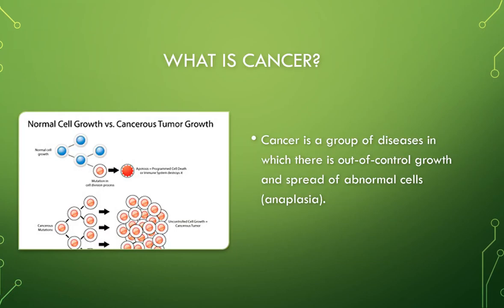I'm going to give a very brief overview — the textbook gives a much more thorough, in-depth discussion. Basically, cancer is an out-of-control growth of abnormal cells. They no longer have the growth inhibitor; they don't listen to those signals anymore. The technical term for that is anaplasia. If you go back to anatomy and physiology or pathophysiology, anaplasia is what we call the spread and proliferation of cancer cells.